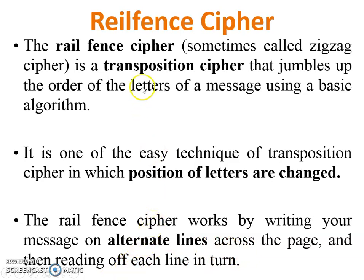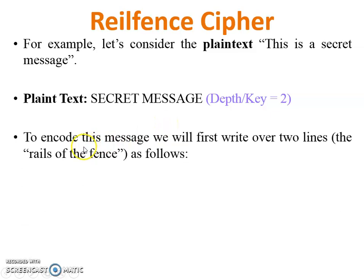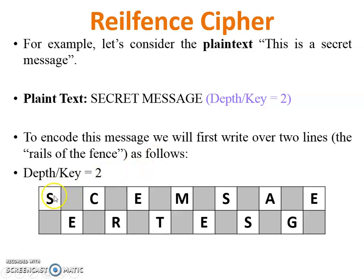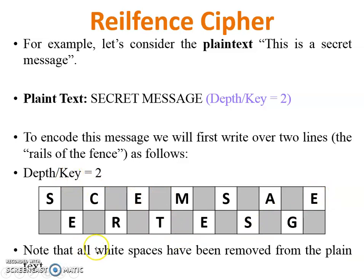Now let's see an example of the Rail Fence Cipher. Consider the plain text: 'This is a secret message.' The plain text is 'a secret message' and the depth or key is equal to 2. To encode this message, we will first write it over two lines — the rails of the fence. With key equal to 2, there are two rows. The plain text SECRETMESSAGE is written in zigzag manner. Note that all white spaces have been removed from the plain text, so spaces are not considered in this Rail Fence Cipher technique.